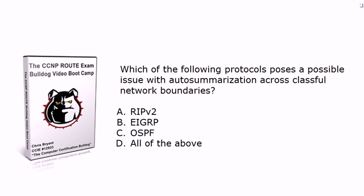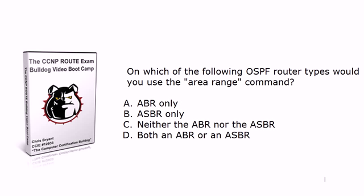For the auto summarization question, you've got to watch out for auto summarization across classful network boundaries when it comes to RIP version 2 and EIGRP — it's not a concern with OSPF. Auto summarization you're usually going to turn off because it tends to work against you. I love summarizing routes wherever I can in a network — it keeps the tables complete yet concise — but you and I as the network admins need to be the ones deciding where summarization should be taking place.